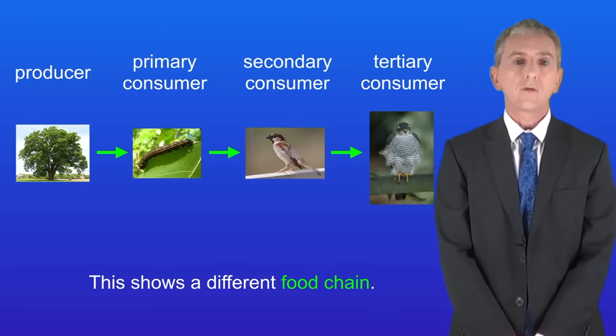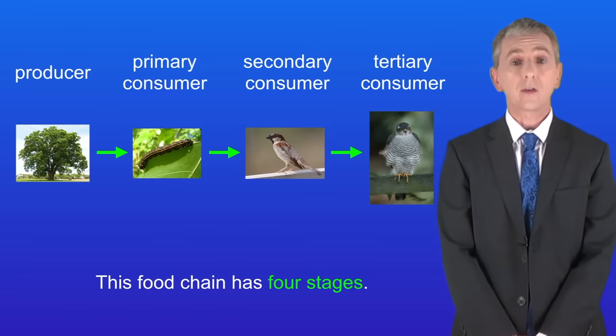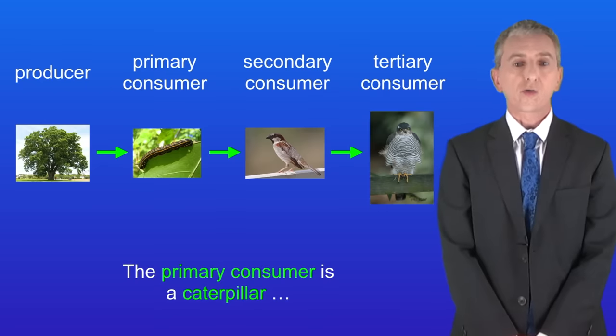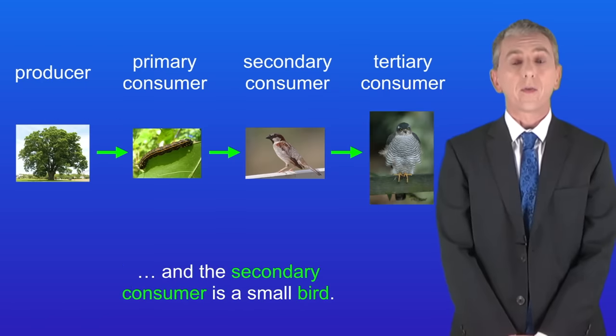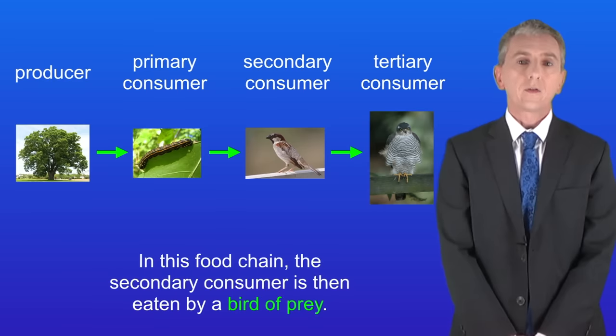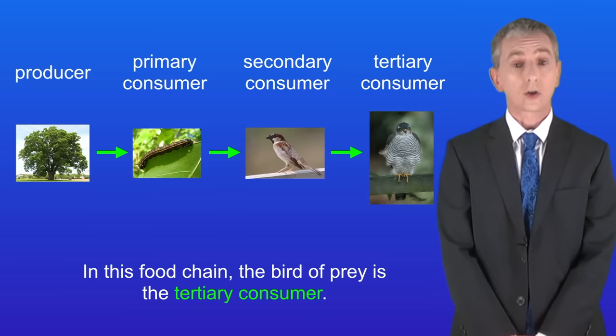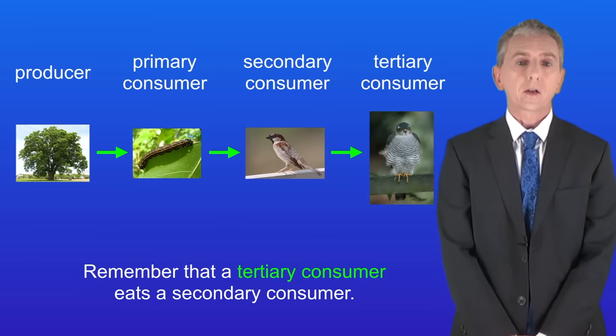Okay I'm showing you a different food chain here and you'll notice that this food chain has four stages. In this case the producer is a tree, the primary consumer is a caterpillar, and the secondary consumer is a small bird. Now in this food chain the secondary consumer is then eaten by a bird of prey. So in this food chain the bird of prey is the tertiary consumer. Remember that a tertiary consumer eats a secondary consumer.